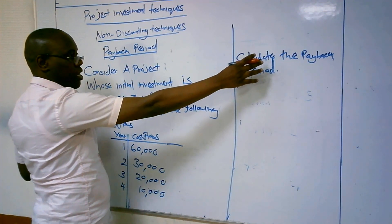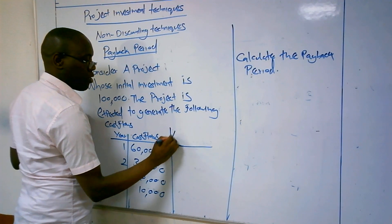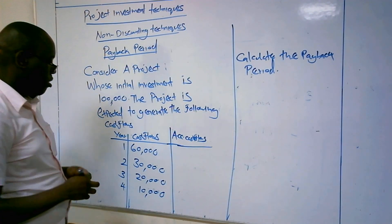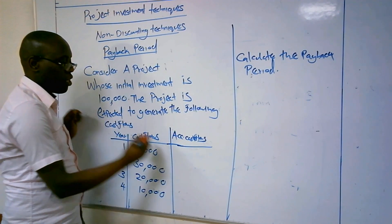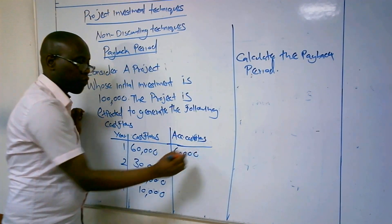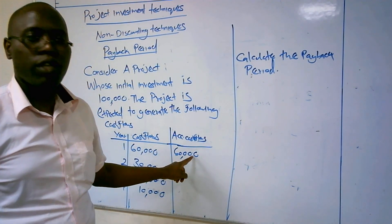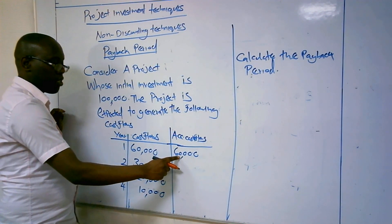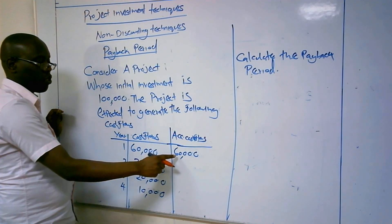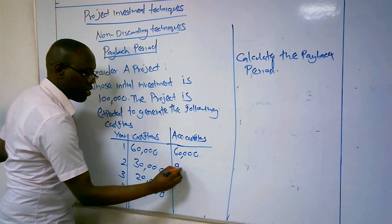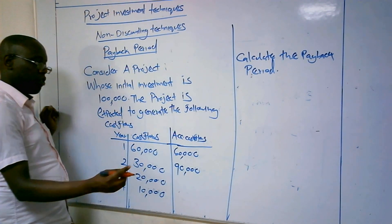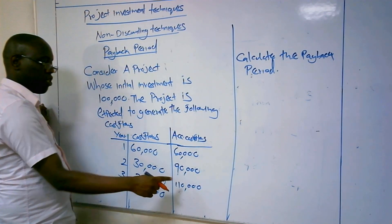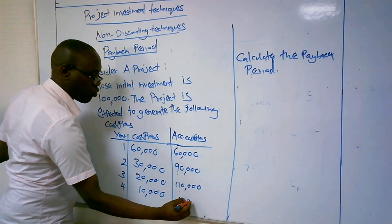What you do is create a column of accumulated cash flows. The first cash flow in year 1 is transferred directly to that column. Then you take $60,000 plus $30,000 to get $90,000 for year 2. Then $90,000 plus $20,000 gives $110,000 for year 3, and $110,000 plus $10,000 gives $120,000 for year 4.